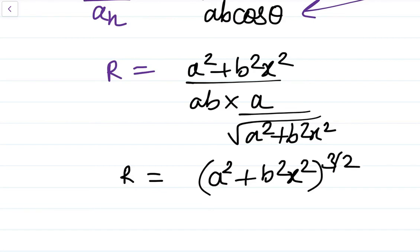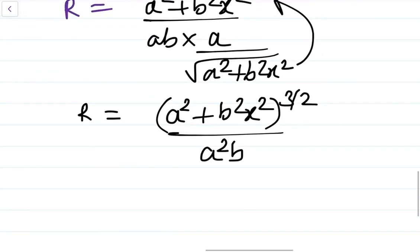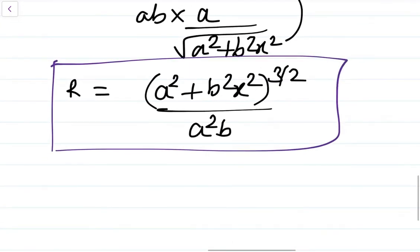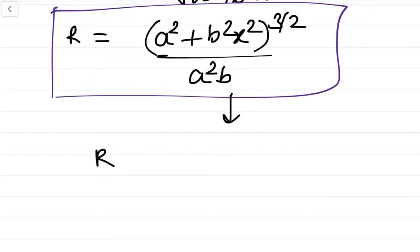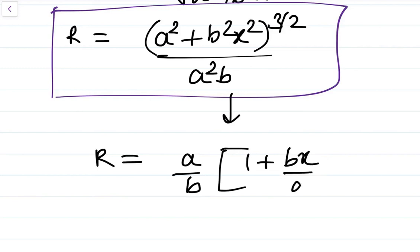Substituting cos theta = a/√(a² + b²x²) into R = (a² + b²x²)/(ab cos theta), we get: radius of curvature = (a² + b²x²)^(3/2) / (a²b). This can also be written as (a/b)(1 + (bx/a)²)^(3/2), which is the same expression as given in the Irodov answer key.